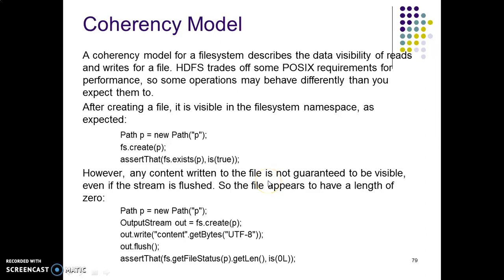Welcome back. Let's continue our discussion on HDFS — this is a continuation of our previous discussions on HDFS write anatomy, where we covered network distance and how replication is done while writing into the system. Now in this session, we'll look at how the coherence model works. The coherence model for a file system describes the data visibility of reads and writes for a file.